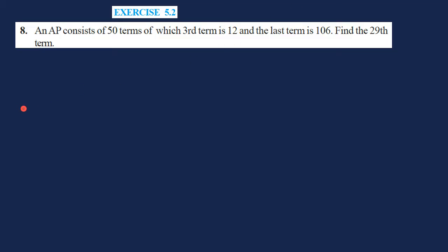Hello guys, let's start the solution for question number 8. In this problem, an AP consists of 50 terms of which the third term is 12 and the last term is 106. So the AP has 50 terms, the third term is 12, and the last term means the 50th term is 106 because in total there are only 50 terms.